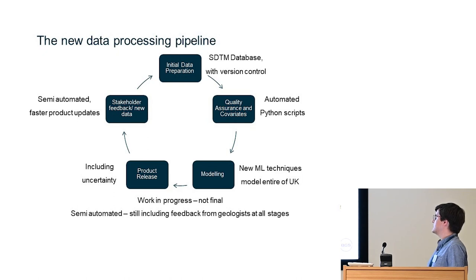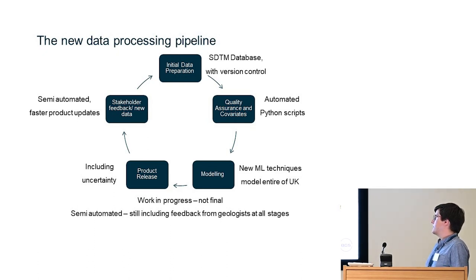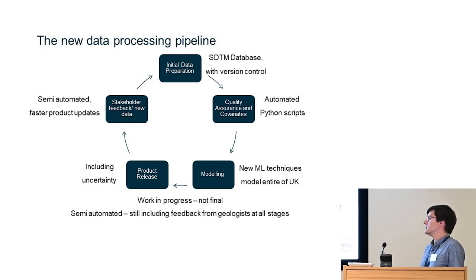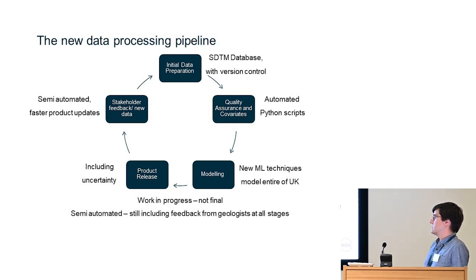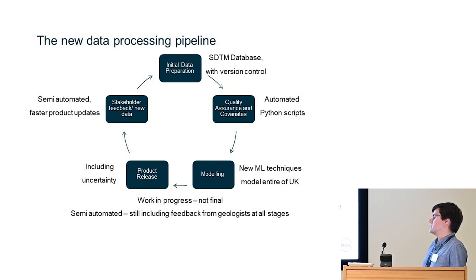We've also got new machine learning techniques to model the entirety of the UK in one go, rather than per quarter sheet. Geologists will then review the prototype model and look for issues before a final product — which will hopefully include uncertainty — is released. Because the process is now semi-automated, when we receive new data, for example in the AGS borehole dataset, it can hopefully be integrated into a new product far faster, because we can run this lifecycle again.